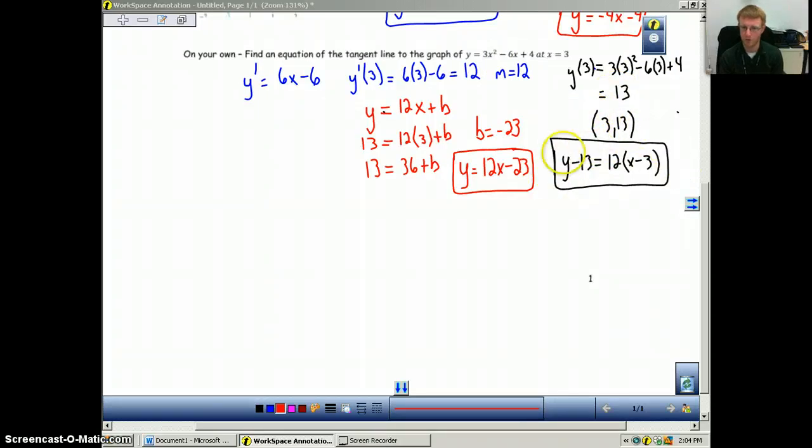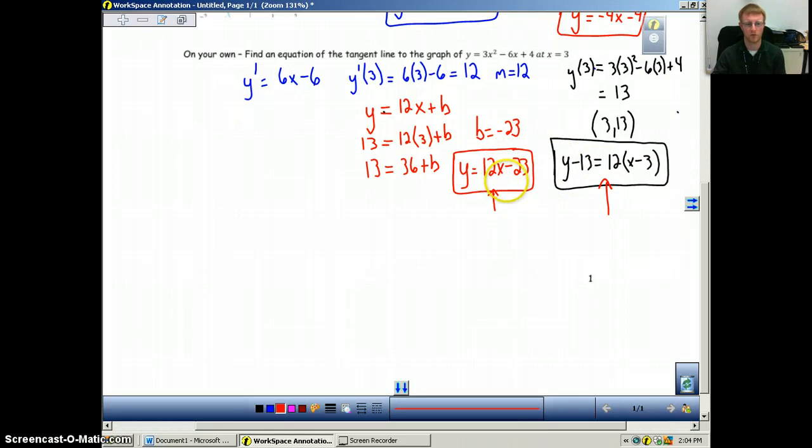So then you can either write out your point-slope form. So that's an equation of the tangent line. Or you can use y equals 12x plus b, solve for b, and get this as your tangent line. Again, both of these equations are exactly the same. Just one is in point-slope form and one is in slope-intercept form.